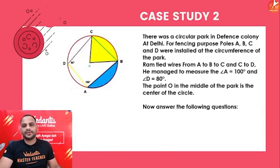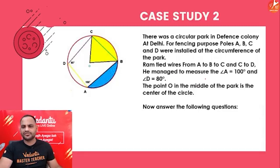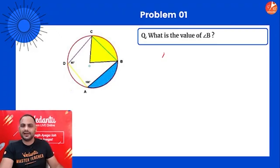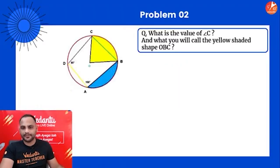Case Study 2: There was a circular park in Defence Colony, Delhi. For fencing, poles A, B, C, and D were installed at the circumference. Ram tied wires from A to B, B to C, and C to D. Angle A is 100 degrees and angle D is 80 degrees. O is the center. Since ABCD is a cyclic quadrilateral, angle B + angle D = 180°, so angle B = 100 degrees.